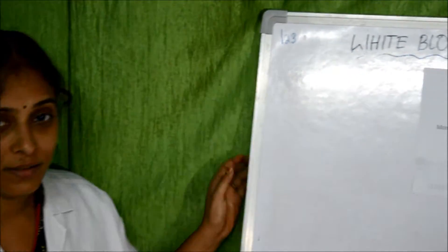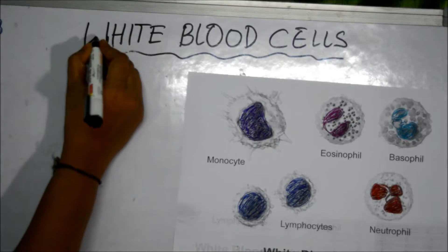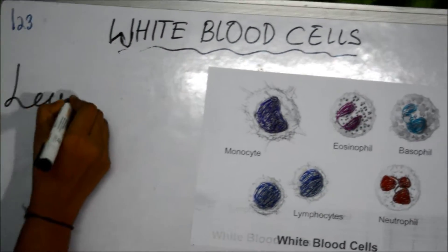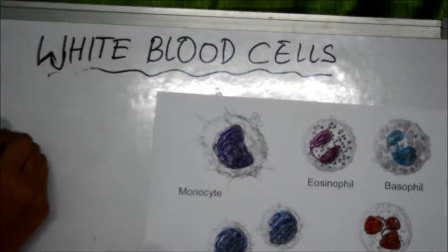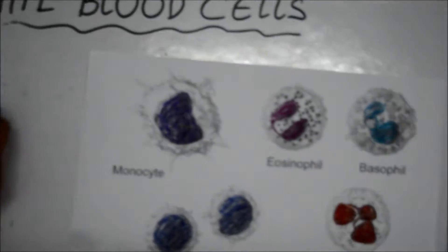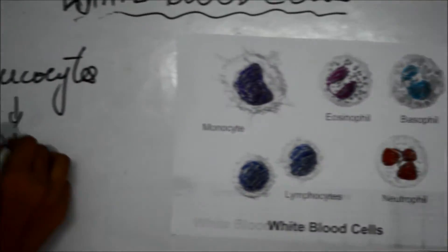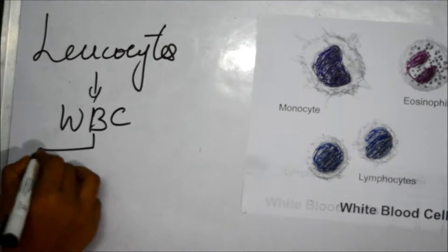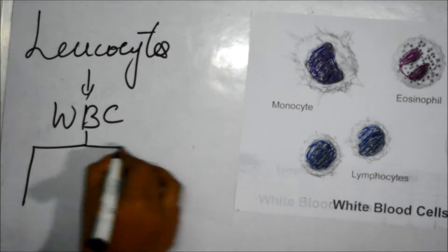Hello everybody. This is Nandita standing before you to give an explanation about white blood cells. White blood cells can also be called as leukocytes, or otherwise called as WBC.